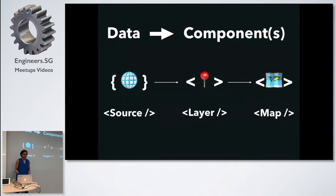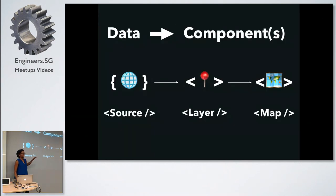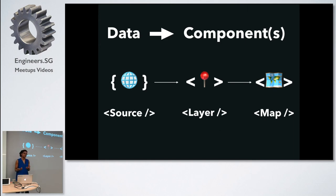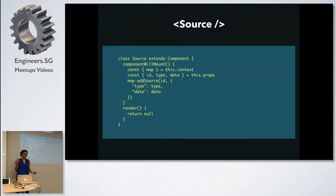The problem now is that source is hard-coded inside Layer. We try to have data not embedded into a component — data is separate and passed through. So we'll create a separate Source component. That Source component will be created and Layer can query that source. Layer doesn't have a lot of responsibility. We take away certain pieces — the ID, type, and data — move addSource into Source, and we have a Source component. Super simple.